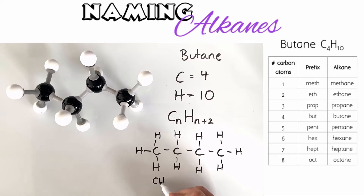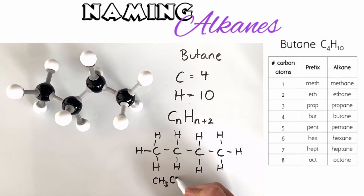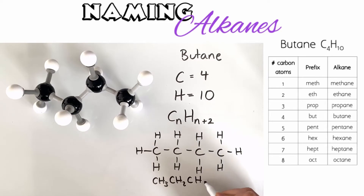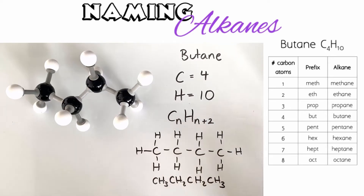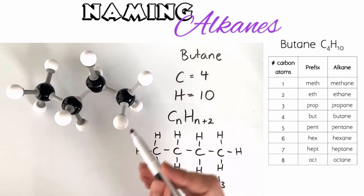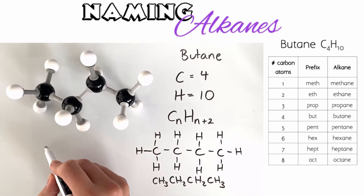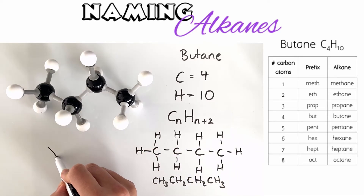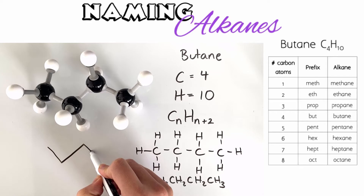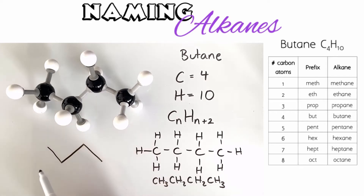A condensed structural formula looks like this. While it doesn't show the bonds, it does show how many hydrogens are attached to each carbon. You may also see a molecule like this represented by a zigzag. Looking at this 3D model, it is not hard to see why — each point on the zigzag represents a carbon atom.